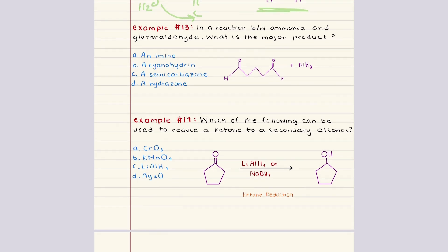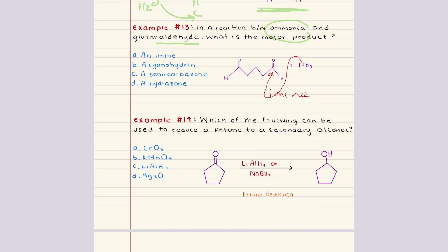Problem thirteen asks in a reaction between ammonia and glutaraldehyde, what is the major product? An aldehyde reacting with a nitrogen-based compound forms an imine. The lone pair on the nitrogen attacks the electrophilic carbonyl carbon, leading to proton transfers and elimination of water, and the final product is an imine where the carbonyl oxygen is replaced with a carbon-nitrogen double bond. Since glutaraldehyde has two aldehyde groups, both can react with ammonia, potentially forming a double imine. Looking at the answer choices, the correct answer is A.